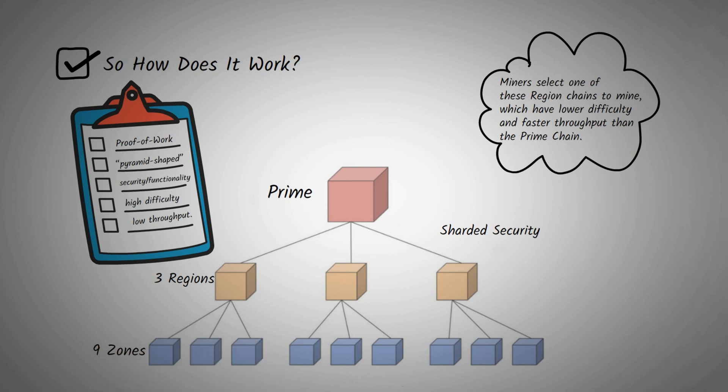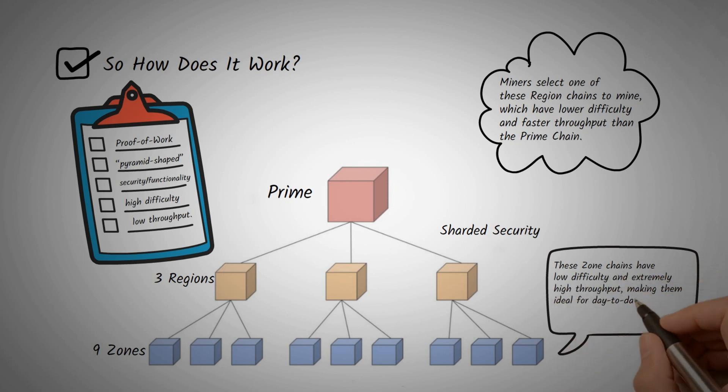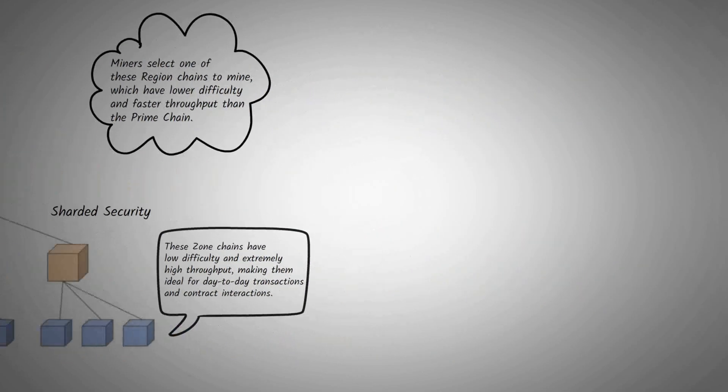Quai Network also has three zone chains within each region, marking a total of nine zone chains in the existing network state. These zone chains have low difficulty and extremely high throughput, making them ideal for day-to-day transactions and contract interactions.